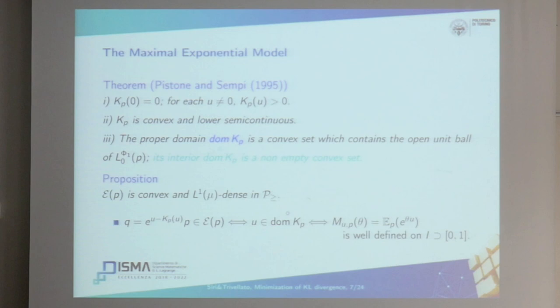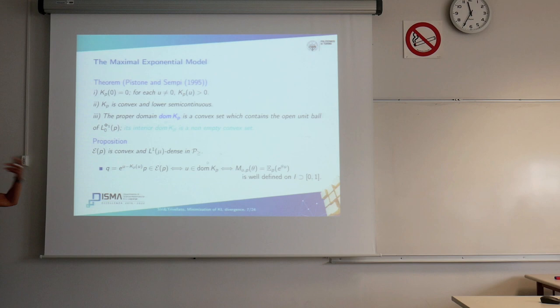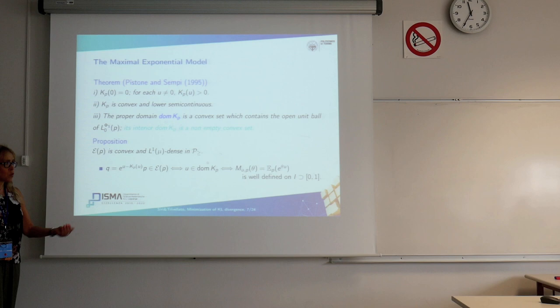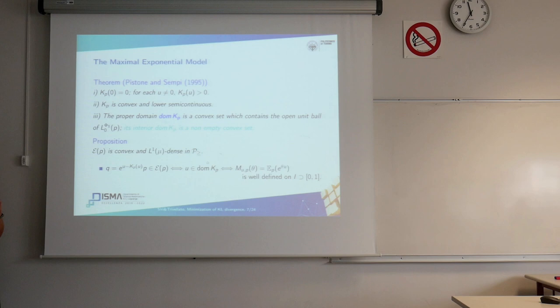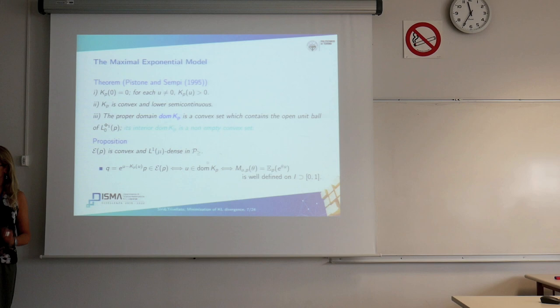Pistone and Sempi proved that the proper domain of k_p is a convex set containing the open unit ball of the Orlicz space, and its interior is a non-empty convex set — so the maximal exponential model is well defined. When a density belongs to the maximal exponential model, the corresponding random variable belongs to the interior of the proper domain of k_p, which means the moment generating function is well defined not only in a neighborhood of zero but in a neighborhood containing the interval [0,1].